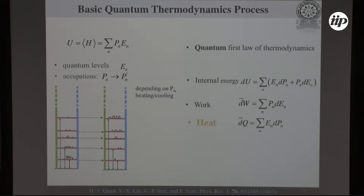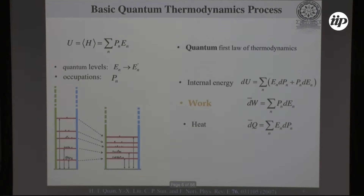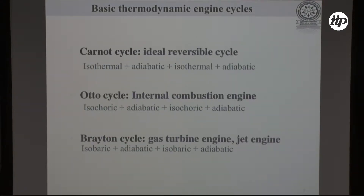In the quantum domain, we redefine heat and work. Heat corresponds to a process where the occupation probability changes while the energy eigenstructure is fixed. Work corresponds to a process where the energy eigenstructure changes while the occupation probability is fixed. Using these definitions, we focus on implementing the Otto cycle in the quantum domain, because the heat and work distinction is clear for each branch: isochoric branches exchange only heat, and adiabatic branches exchange only work.